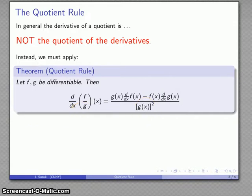That's in differential notation. Equivalently, if we want to use prime notation to express this rule, the derivative of a quotient equals the denominator times the derivative of the numerator, minus the numerator times the derivative of the denominator, all over the square of the denominator.